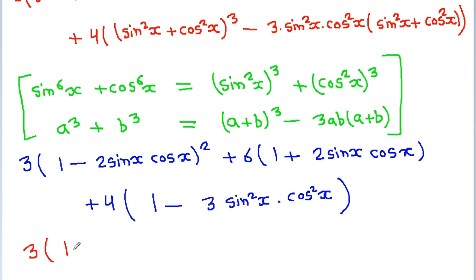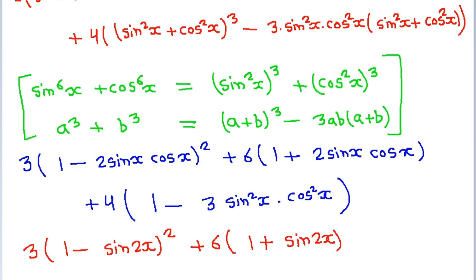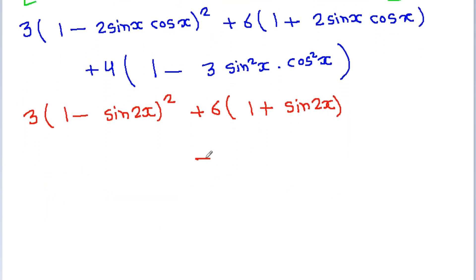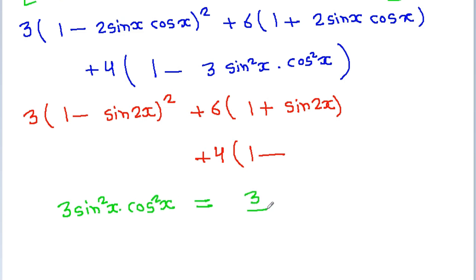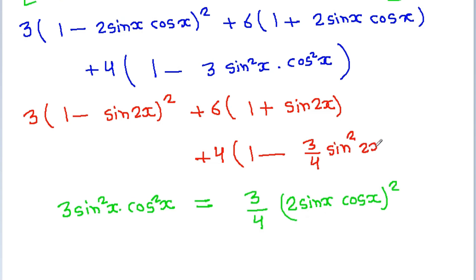So we get 3 into (1 minus sin 2x)² plus 6 into (1 plus sin 2x) plus 4 into (1 minus 3 sin²x cos²x). Now, 3 sin²x cos²x can be rewritten as (3/4) into (2 sin x cos x)², which equals (3/4) sin²2x.